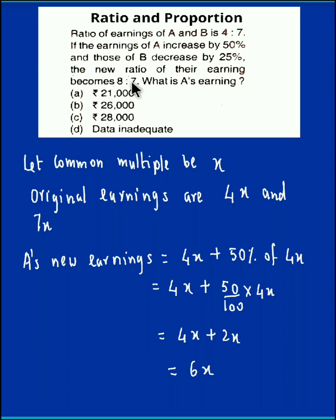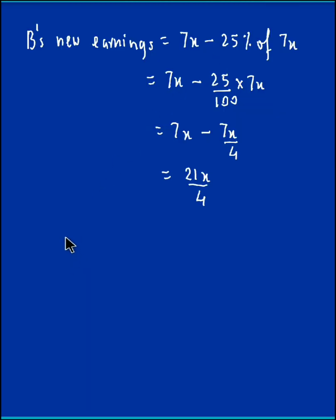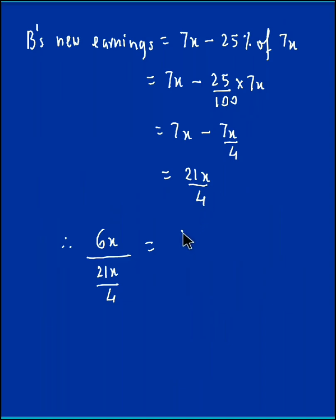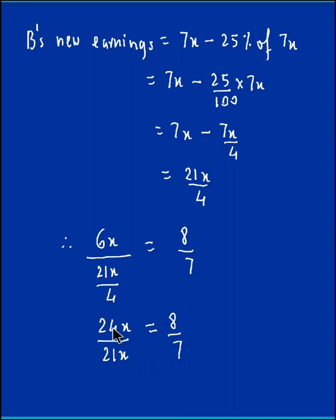They have given that the ratio of the earnings now becomes 8:7. So A's new earnings to B's new earnings is 8:7. Therefore 6x : 21x/4 = 8:7. The 4 gets transferred to the numerator, so 6x times 4 gives 24x, making it 24x : 21x = 8:7. Now x gets cancelled off from both sides.